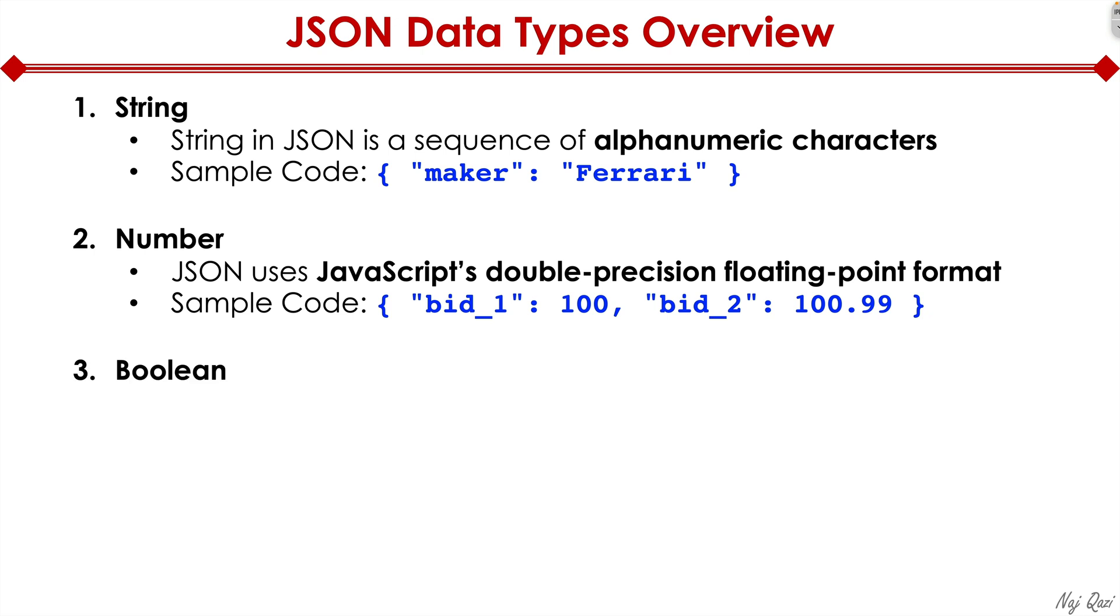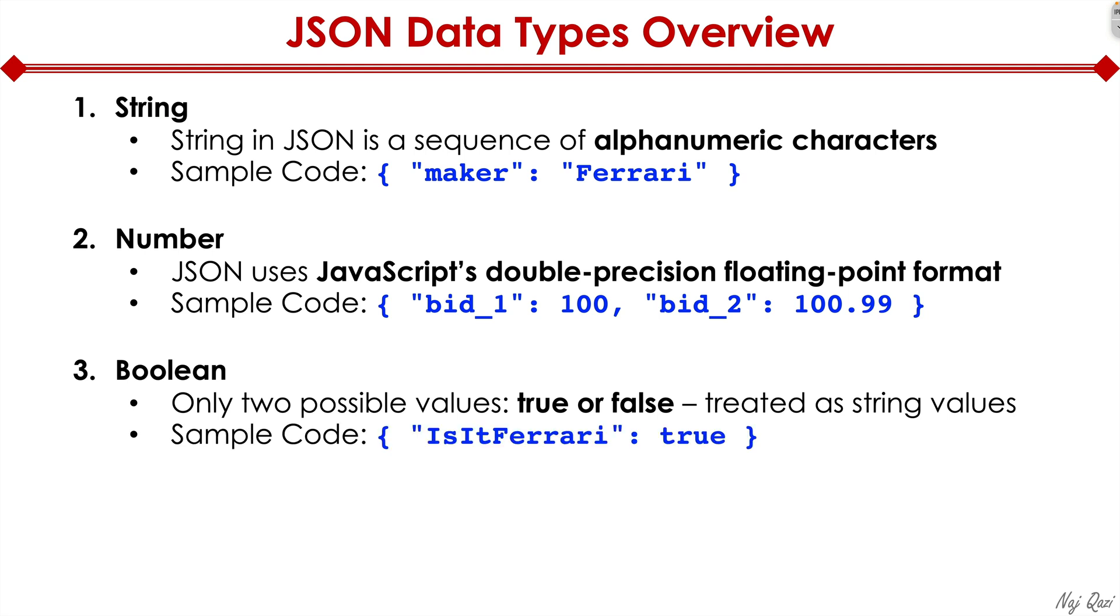Now let's look at Boolean. Boolean is basically binary. What that means is you only have two possible values. It's either true or false. And Boolean is treated as string values. Here's a sample code. We're saying, is it Ferrari? Of course it is, so it's true. But if it said is it BMW, you would have said false.